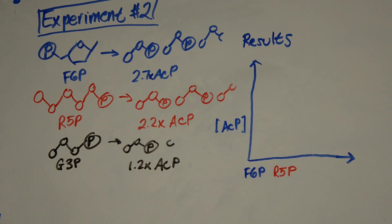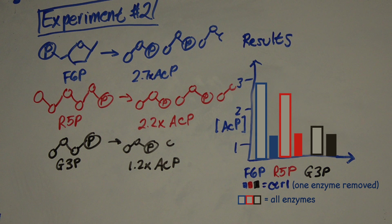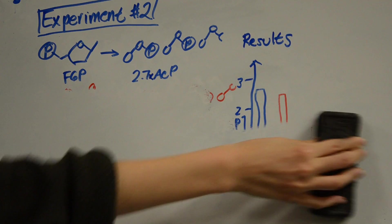They also performed a control, where they removed one of the enzymes, rendering the pathway inactive, and found significantly decreased ACP production, as expected. Overall, these experiments confirmed that their pathway was working in a stoichiometrically predictable way, and that the enzymes they used were relevant and necessary to produce the products they wanted.